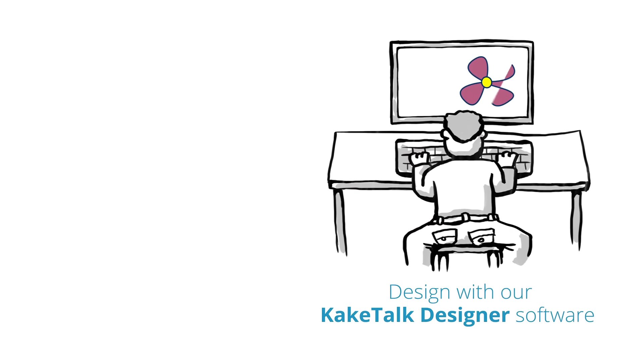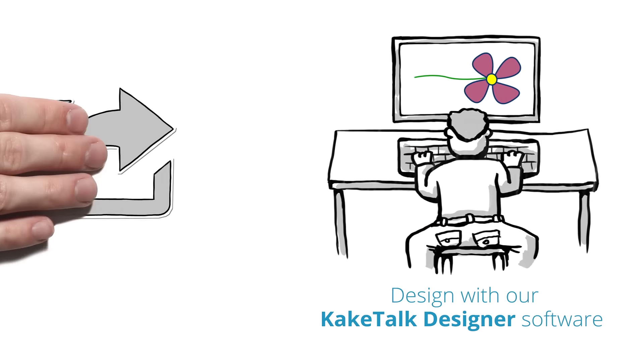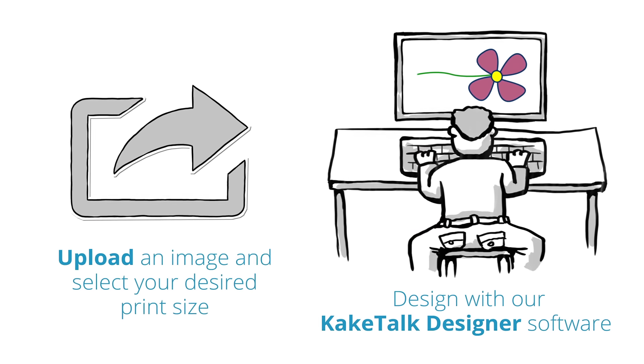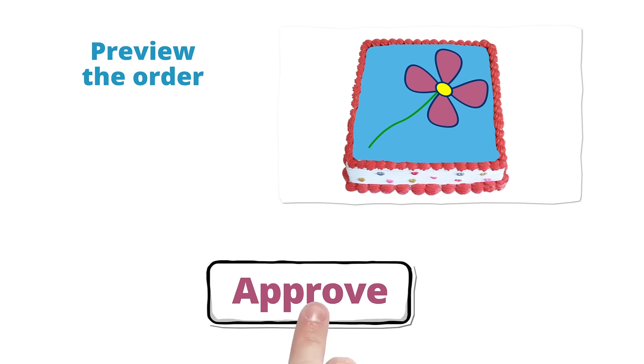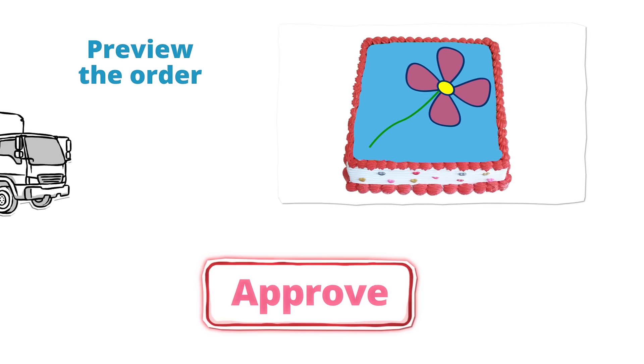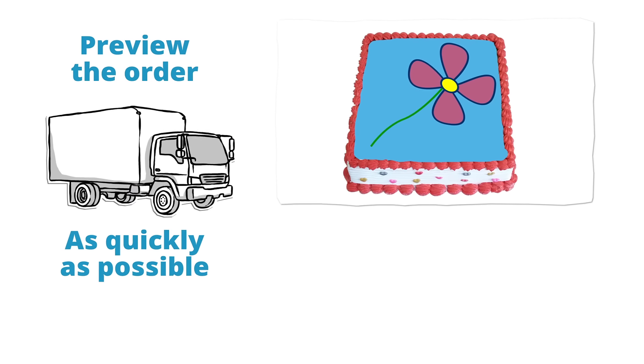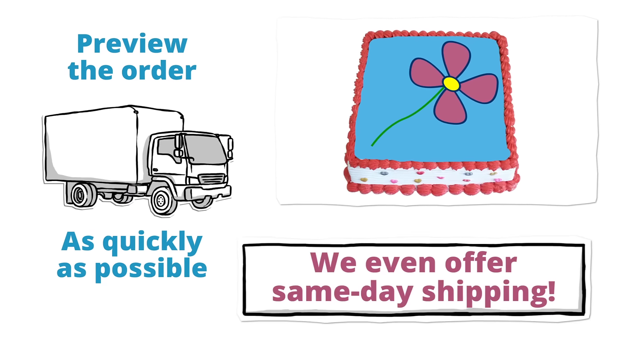Simply design your own edible print with our Cake Talk Designer software, or upload an image and select your desired print size. Then you'll preview the order, and after you approve of it, we'll deliver it as quickly as possible. We even offer same-day shipping.